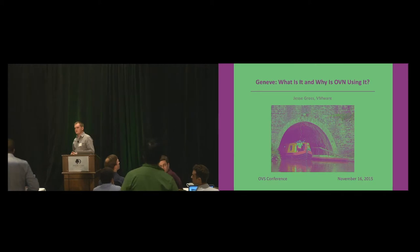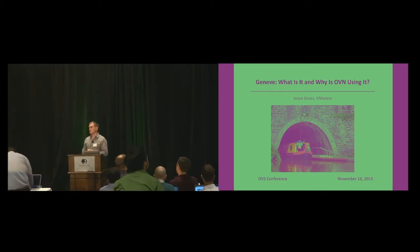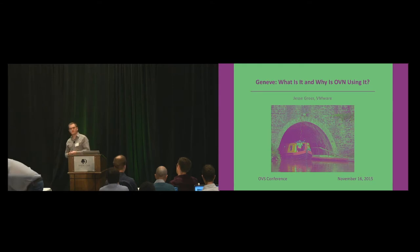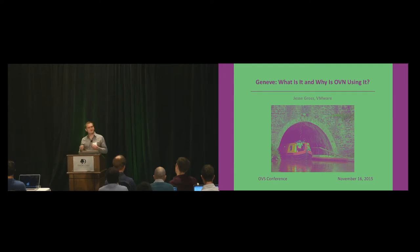And the reason why I think it's interesting, because as you heard in the last talk, OVN has started using Geneve as its encapsulation format that's using by default between hypervisors. And this pretty much immediately prompts a question, maybe, what is Geneve? Or at the very least, why are you using Geneve as opposed to something like VxLAN?